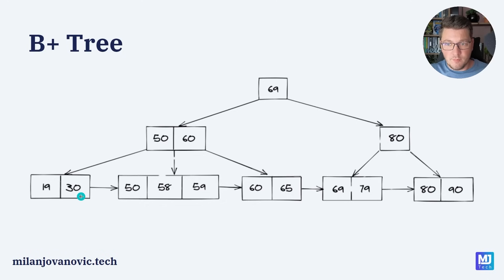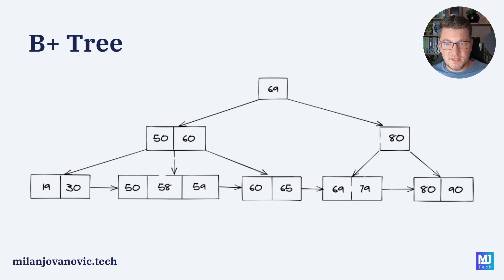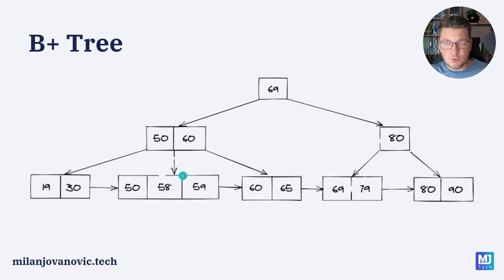Leaf nodes are actually pointers to a specific row in the database — this is typically going to be your primary key. A leaf node can also point to the next set of nodes, and these are qualities that databases can use to improve query performance. Now where a UUID is problematic is because it's entirely random, and a B+ tree is a sorted data structure. So when you try to insert a random value into a B+ tree at the leaf level it's going to cause rebalancing and restructuring of the tree, which is bad for performance.